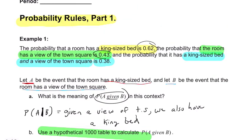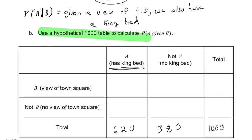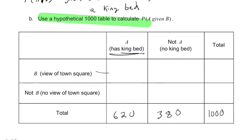The next one says the probability has a view is 0.43. So views correspond to this row right here, and that's 430, which means 570 goes here because 430 plus 570 is 1,000.